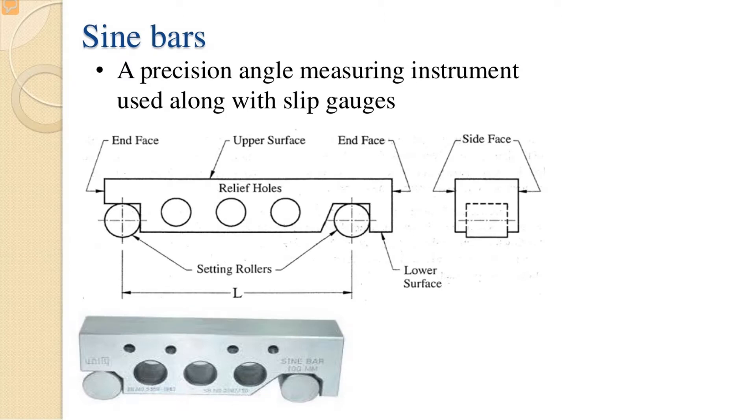Our first topic is sine bar. What is sine bar? A precision angle measuring instrument used along with slip gauges. The sine bar is rectangular in shape with a base. It has holes which are relief holes to remove stress concentration. There are two holders, the setting rollers, on the sine bar block.